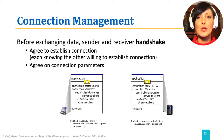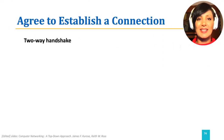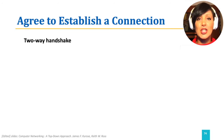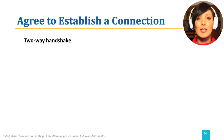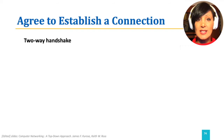TCP uses a handshake process to establish the connection. There are different ways to do a handshake. Before discussing TCP handshake for connection establishment, we are going to learn about two-way and three-way handshakes. First, the two-way handshake, which is the exchange of two messages to establish a connection — the request for the connection and the acceptance message.